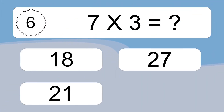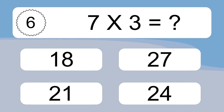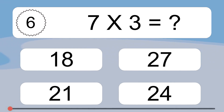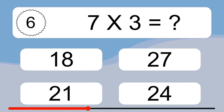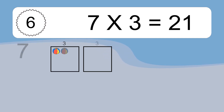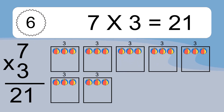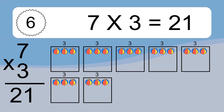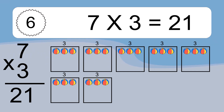7 x 3 equals what? 7 x 3 equals 21. We have 7 boxes, and each box has 3 colorful balls inside. If you count all the balls in all the boxes together, you will have 7 x 3 balls. This equals 21 balls.